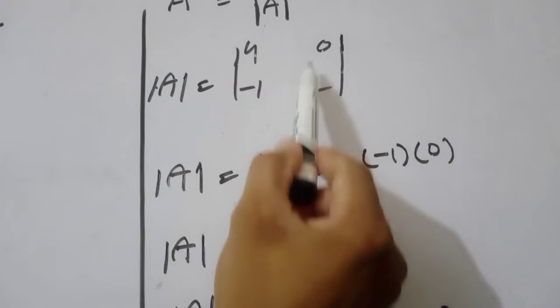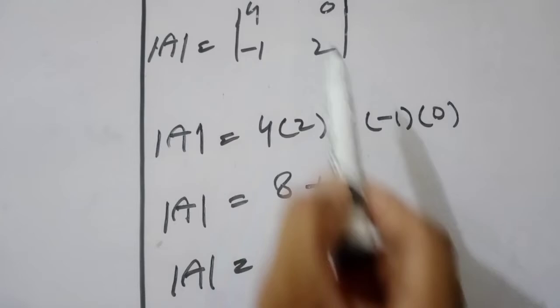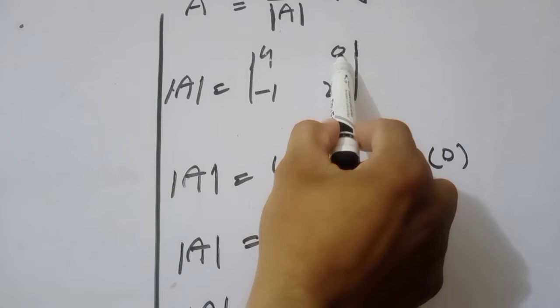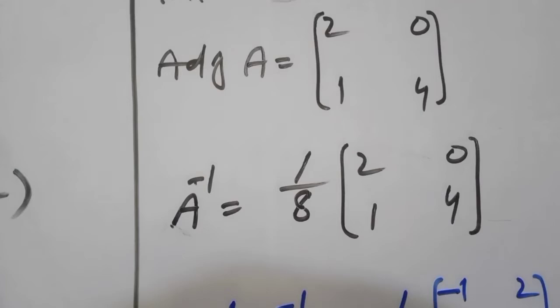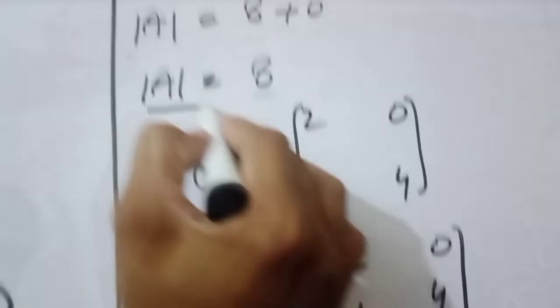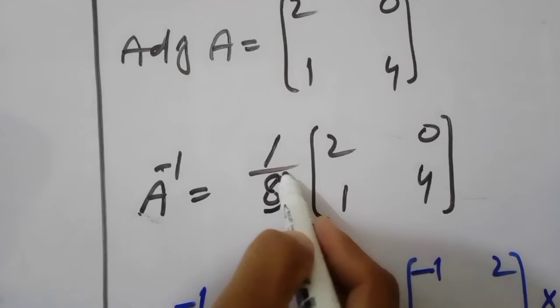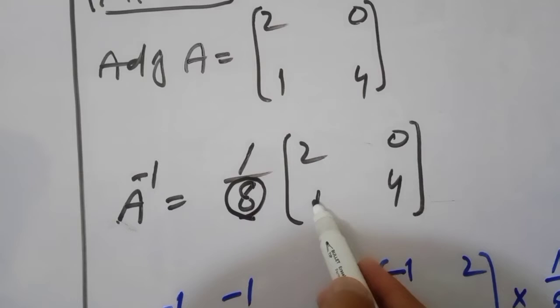अब adjoint A find करेंगे। A का matrix है — A की values put की हुई हैं। 4 और 2 को exchange कर दें: 2 और 4 हो गया। 0 के साथ: 0 neutral number होता है, इसके साथ sign नहीं होती। Minus 1 है तो यहाँ plus 1 हो जाएगा। Adjoint A find किया। A inverse = 1 over det(A) = 1 over 8 × adjoint A: matrix 2, 0, 1, 4।